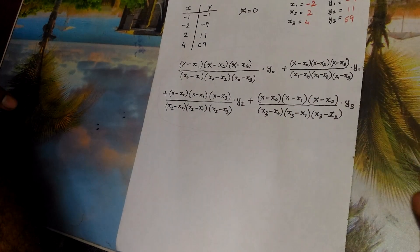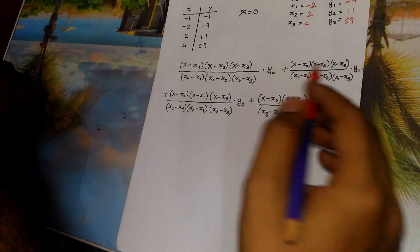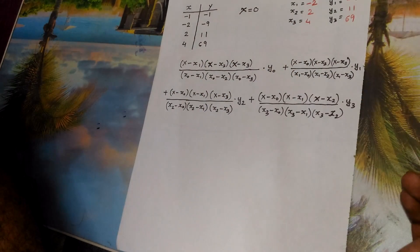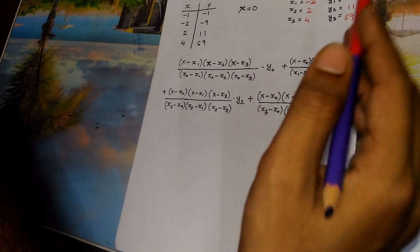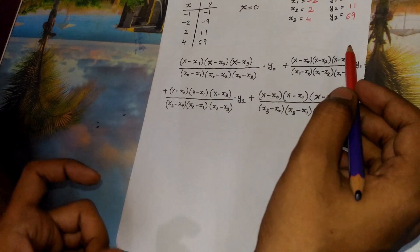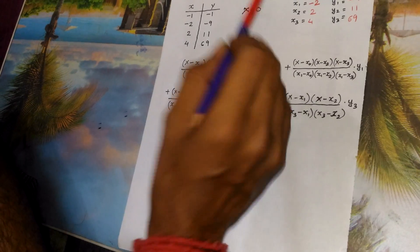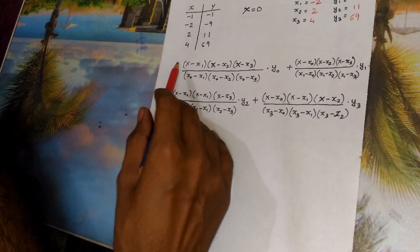We can solve two types of problems using Lagrange's interpolation. You may be asked to find the polynomial f(x) depending on the values of x given, or you may be asked to find out the value of f(x) for a given value of x. Like here I have given the value of x as 0.